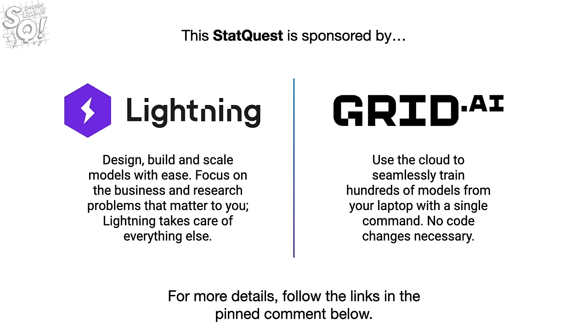This StatQuest is sponsored by Lightning and Grid.ai. With Lightning, you can design, build, and scale models with ease. Focus on the business and research problems that matter to you. Lightning takes care of everything else. And with Grid, you can use the cloud to seamlessly train hundreds of models from your laptop with a single command. No code changes necessary. For more details, follow the links in the pinned comment below.